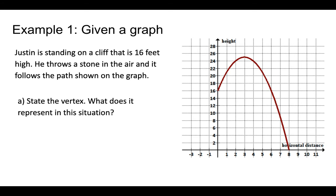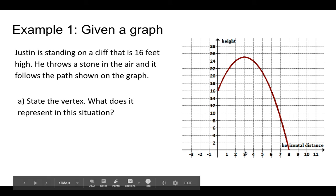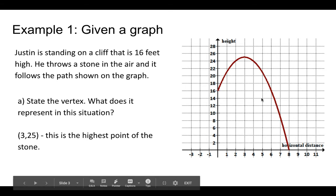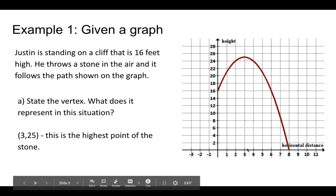The first question is: state the vertex and what does it represent in this situation? The vertex is the very top of a graph. It's a point, so you find your x value first, which is 3, and then your y value — notice how it's halfway between 24 and 26, so it'll be 25. So the vertex is written as the point (3, 25). What does this represent? This is the highest point of the stone. Justin throws the stone, it goes up, and gravity brings it back down. It occurs when the stone is three meters away from the cliff and 25 meters high from the ground.